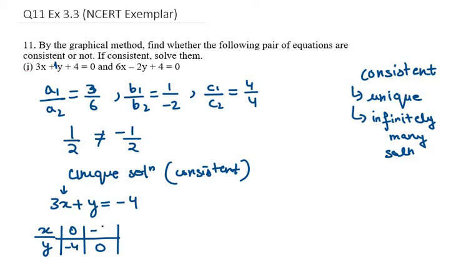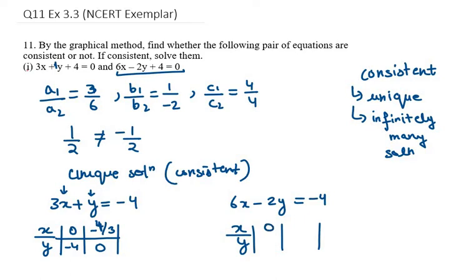If I take y as 0, then I get minus 4 over 3. Now solving the second equation: 6x minus 2y equals minus 4. Again taking the same approach — when x is 0, I get minus 4 over minus 2, which is 2. When y is 0, 2 times 0 is 0, so I get minus 4 over 6, which is minus 2 over 3.